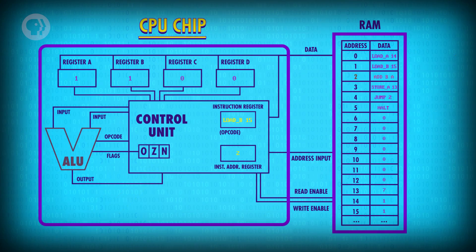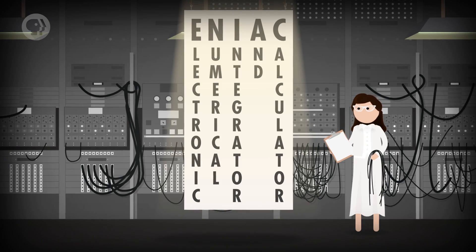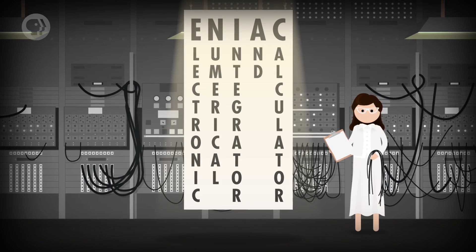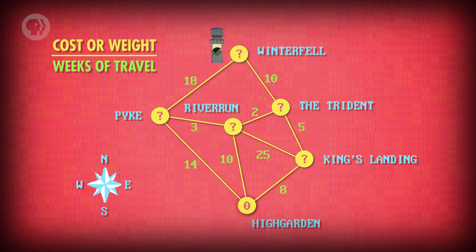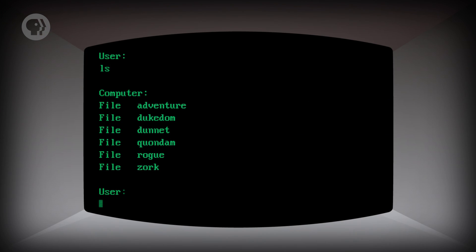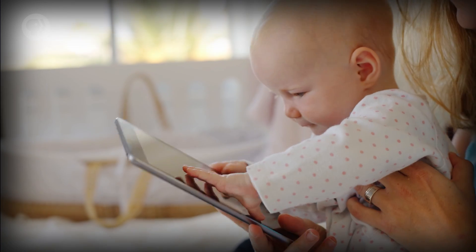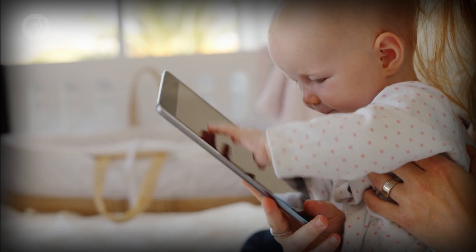Hi, I'm Carrie-Anne, and welcome to Crash Course Computer Science. Over the course of this series, we've focused almost exclusively on computers – the circuits and algorithms that make them tick. Because this is Crash Course Computer Science. But ultimately, computers are tools employed by everyone, and humans are, well, messy.